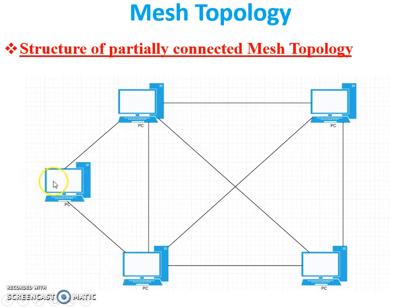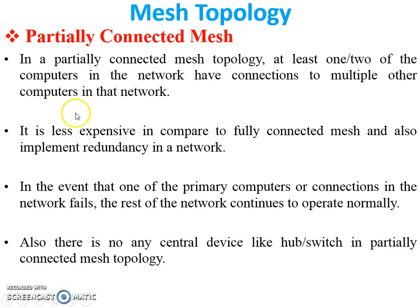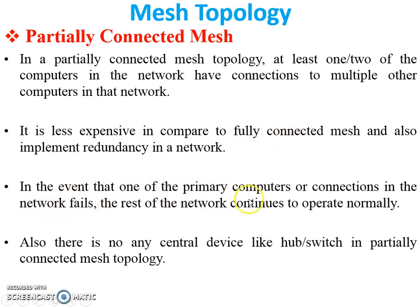In a partially connected mesh topology, at least one or two of the computers in a network have connections to multiple other computers in that network. Partially connected mesh topology is less expensive compared to fully connected mesh topology. In the event that one of the primary computers or connections in the network fails, the rest of the network continues to operate normally, so the whole network will not go down.